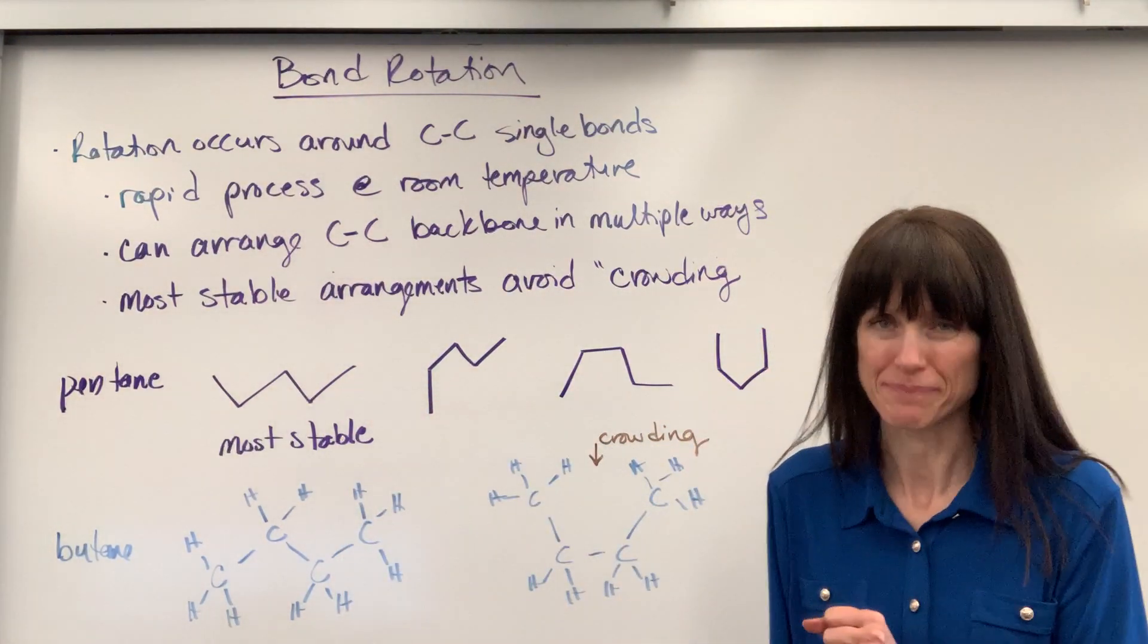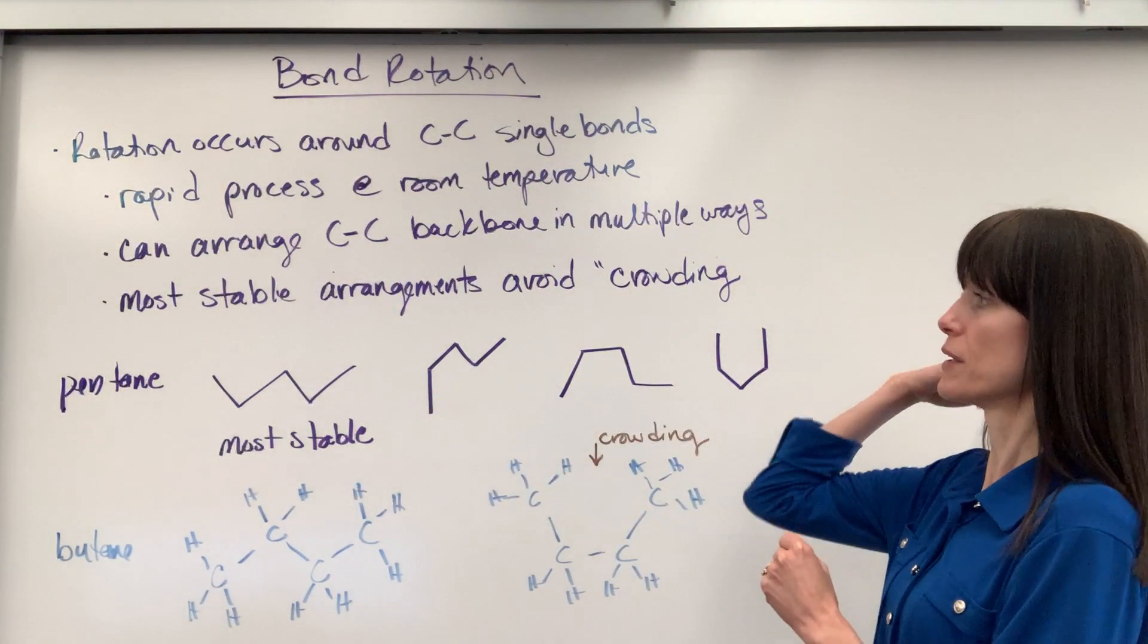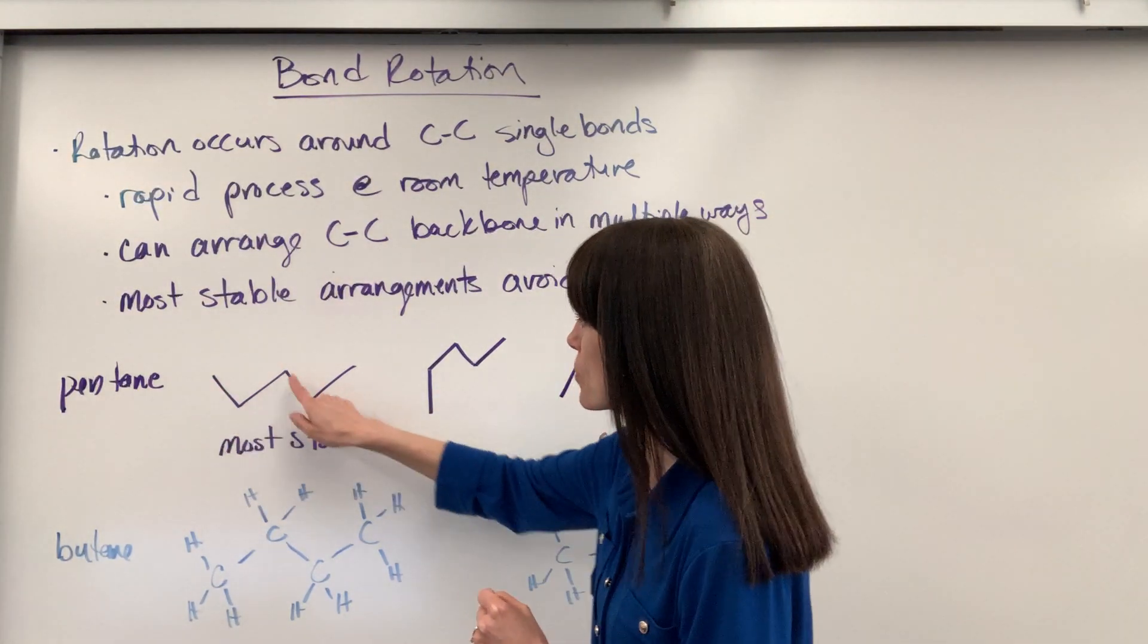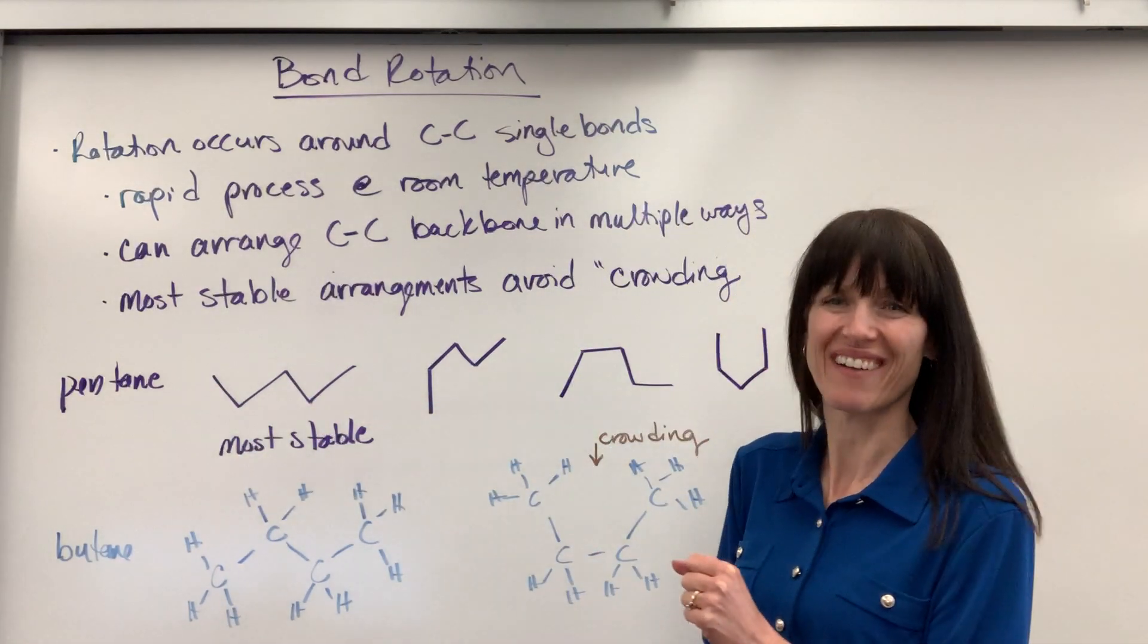So here's two examples. We're going to look at a pentane and a butane. I'm going to use the skeletal structures on the pentane. So we've got one, two, three, four, five. One, two, three, four, five. Sorry about that, carbons.